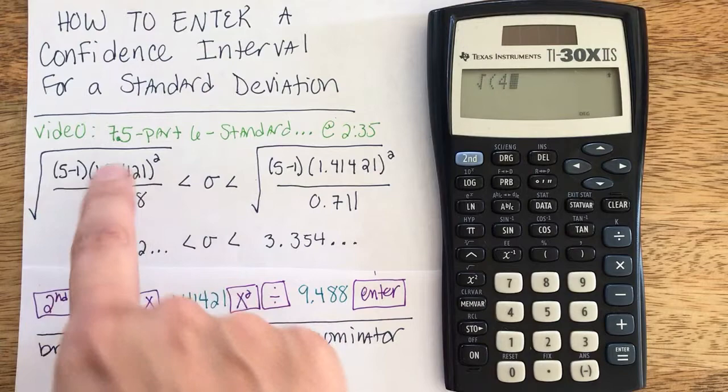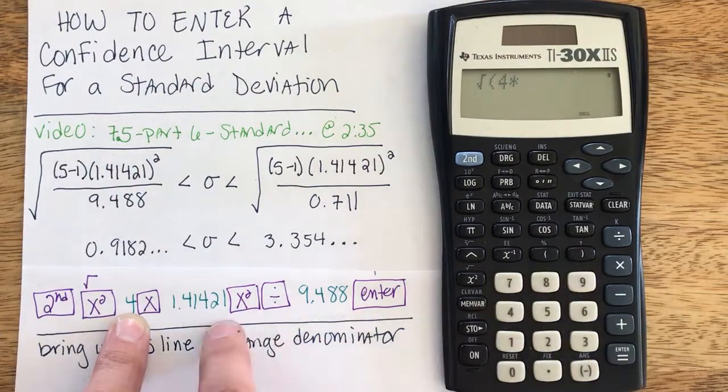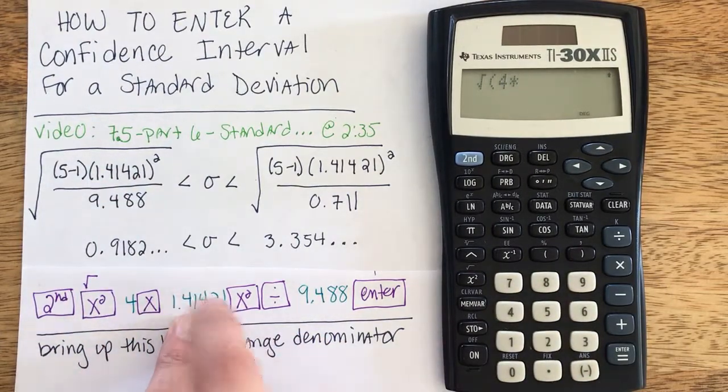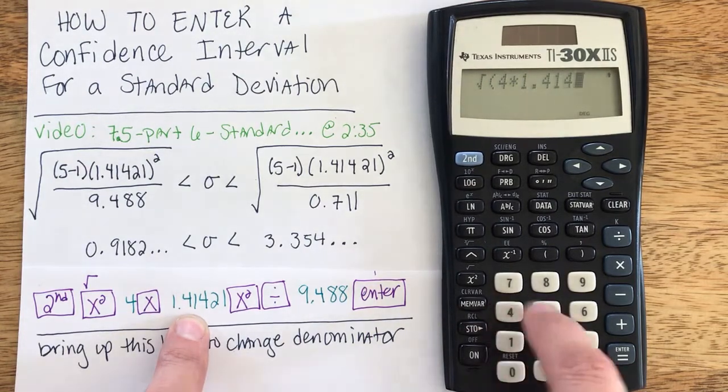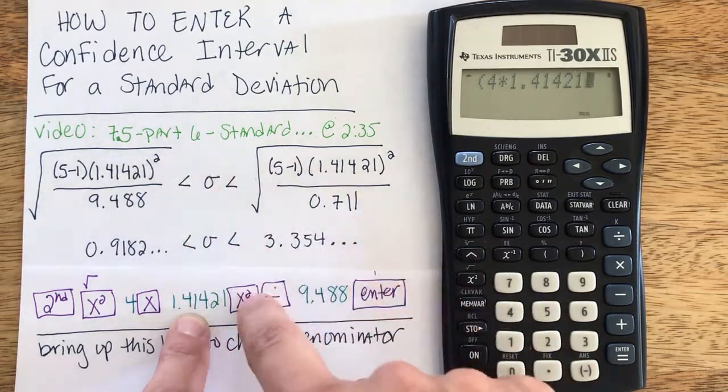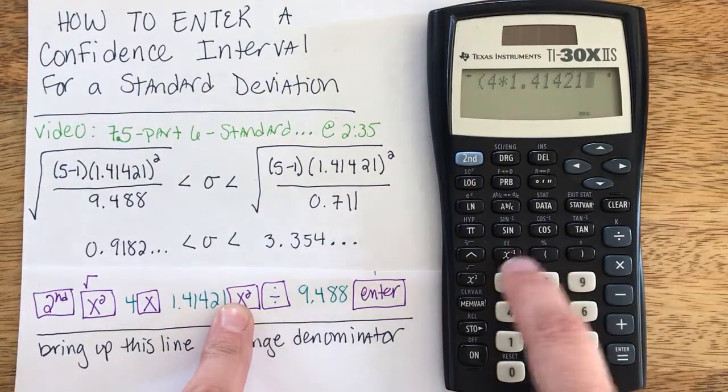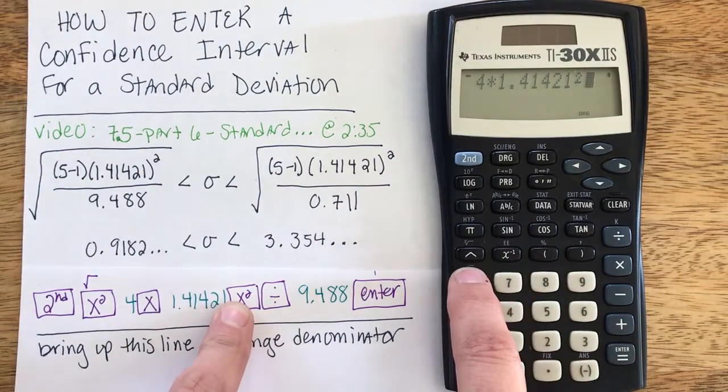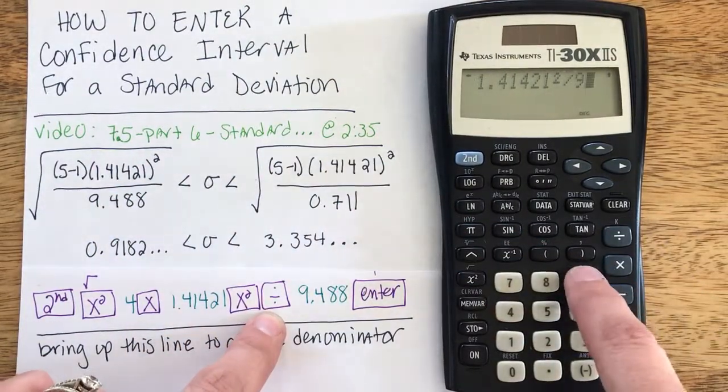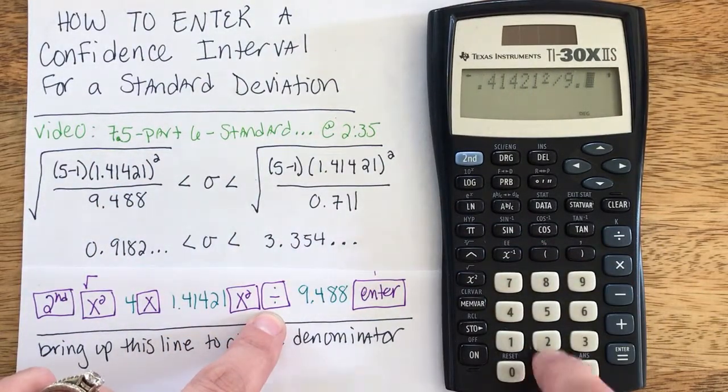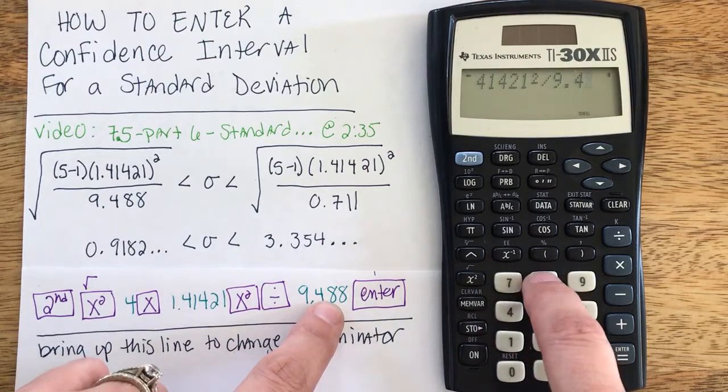And now without needing another set of parentheses, I can hit times s, my sample standard deviation, of 1.41421. Super important! Do not forget to square that. That is the most common mistake I see. I'm going to continue dividing by my denominator, which was the table value 9.488.